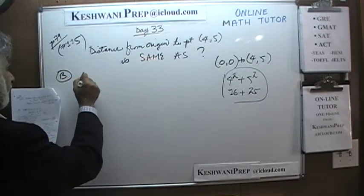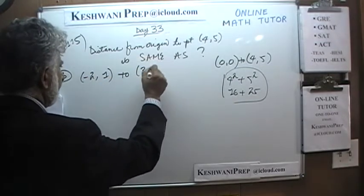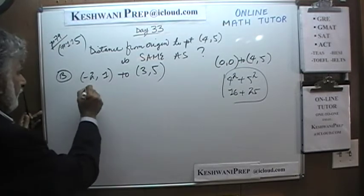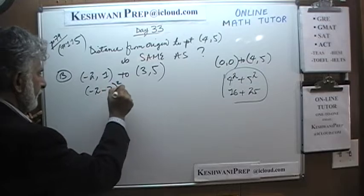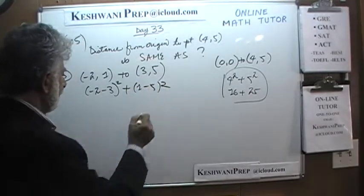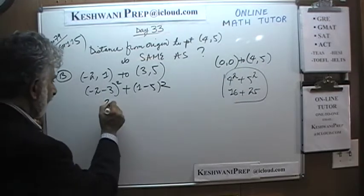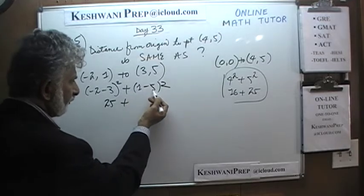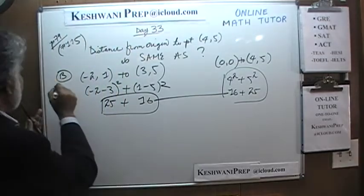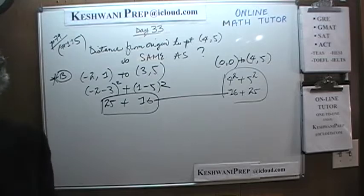For answer choice B — from (-2, 1) to (3, 5) — the distance squared is (-2-3)² + (1-5)² = (-5)² + (-4)² = 25 + 16. That matches 16 + 25 exactly. The answer is B.